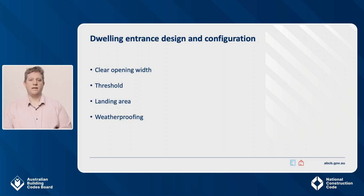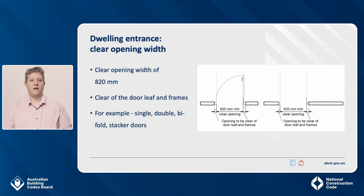There are four components for the dwelling entrance design and configuration covered in the standard: clear opening width, threshold, landing area, and weatherproofing. The standard requires a clear opening width of 820 mm, meaning 820 mm clear of the door leaf and frames. Generally this means you'll need to use at least an 870 mm leaf door to achieve this, assuming door stops of 11 mm on each side and a door depth of 35 mm — a common industry standard. Many door types may be used provided the overall clear opening width is not less than 820 mm, for example double, bifold and stacking sliding doors.